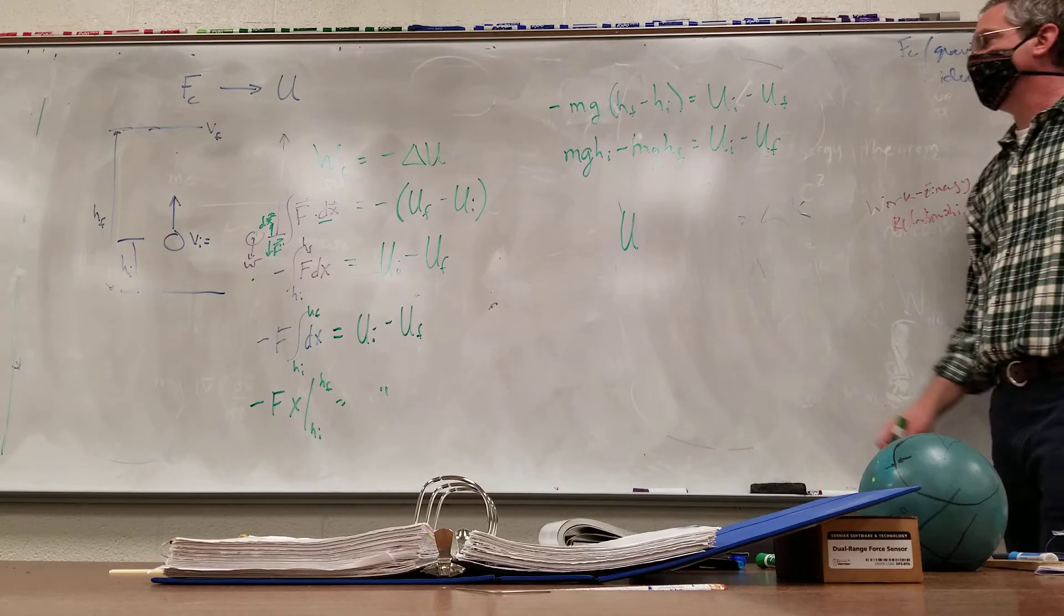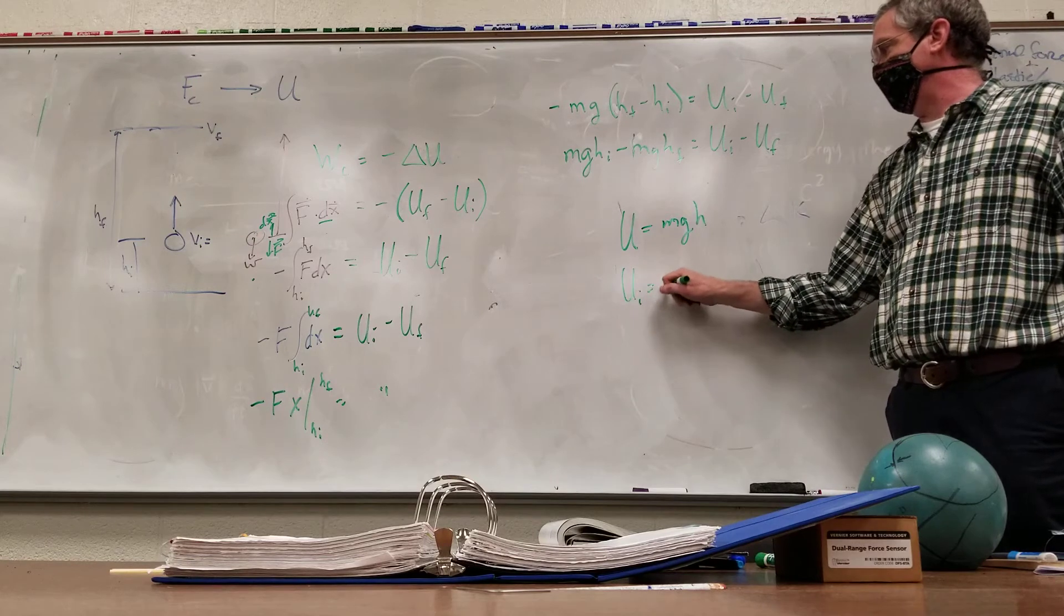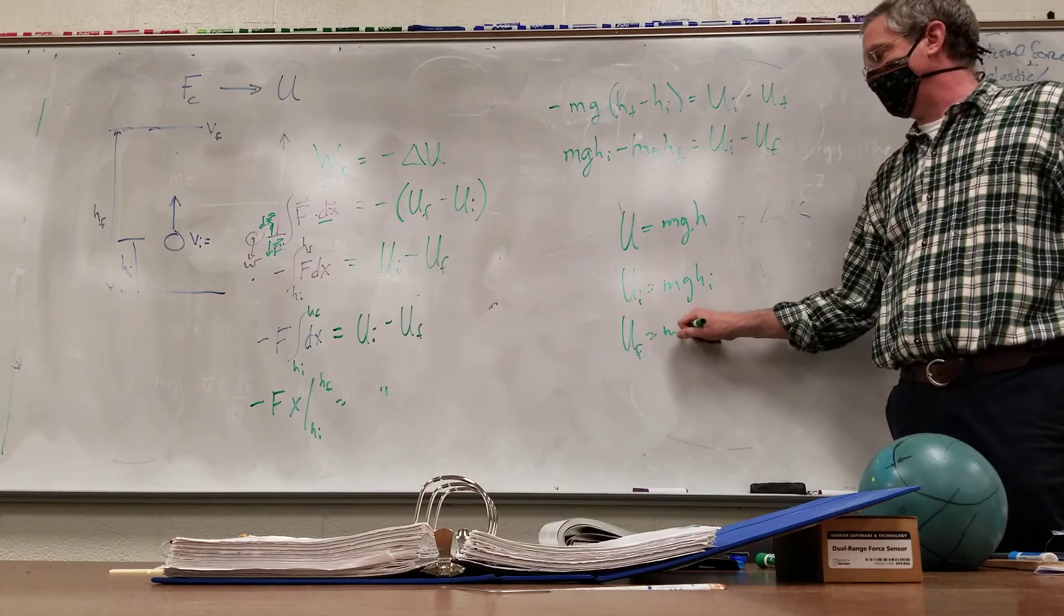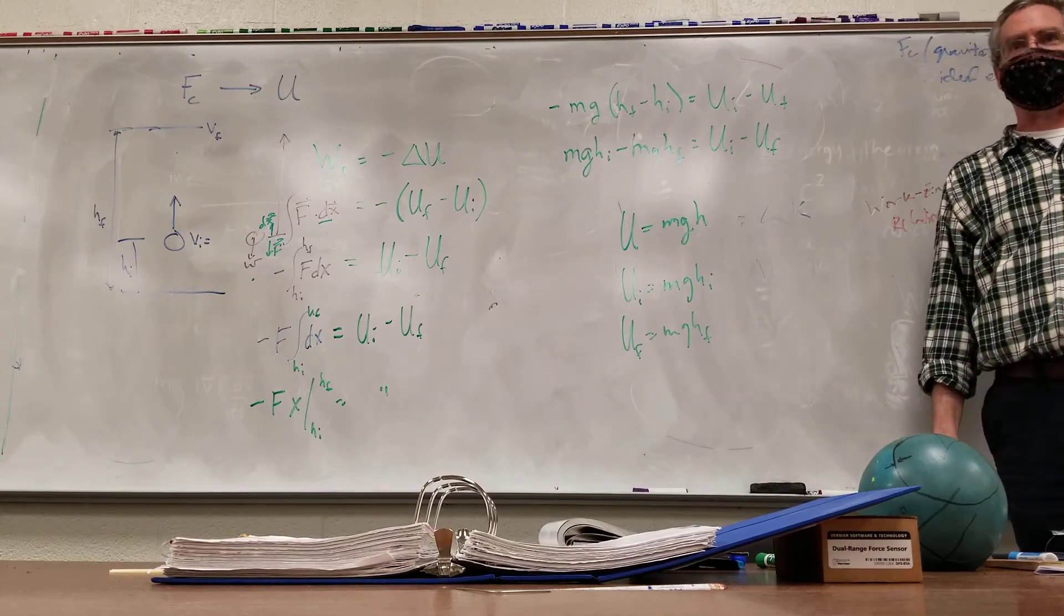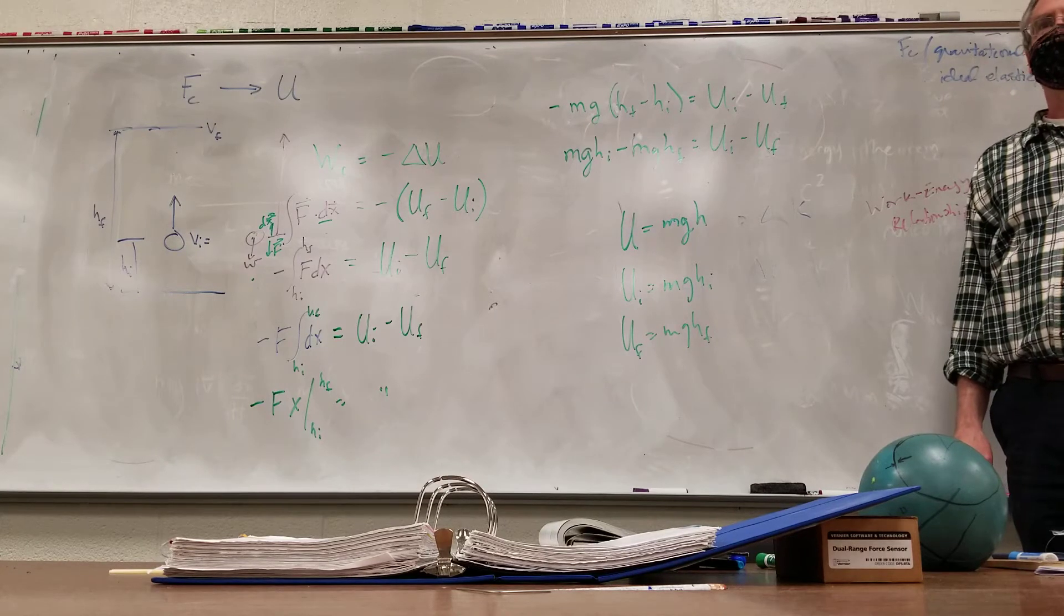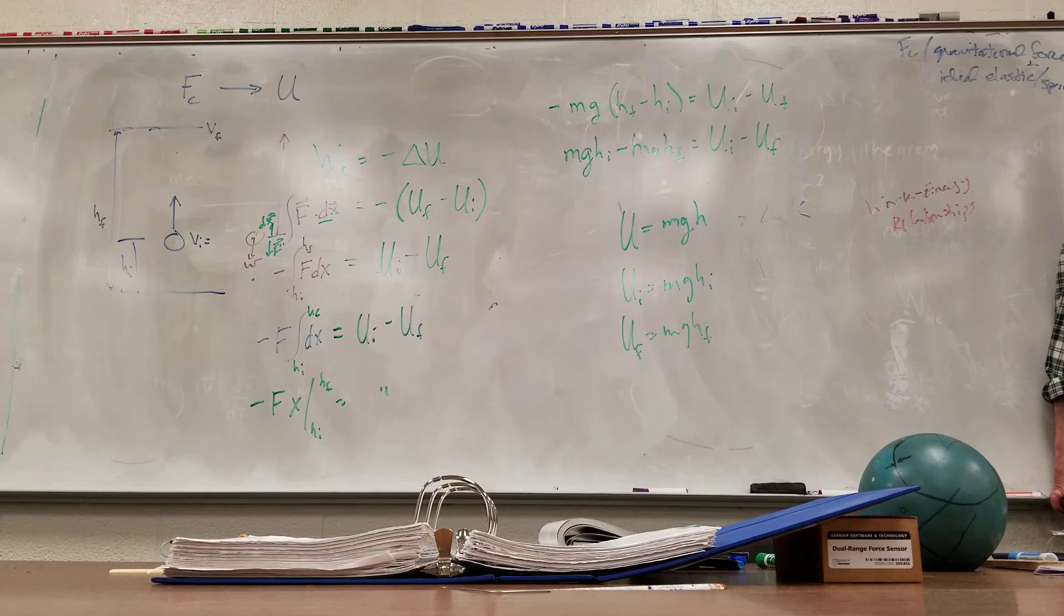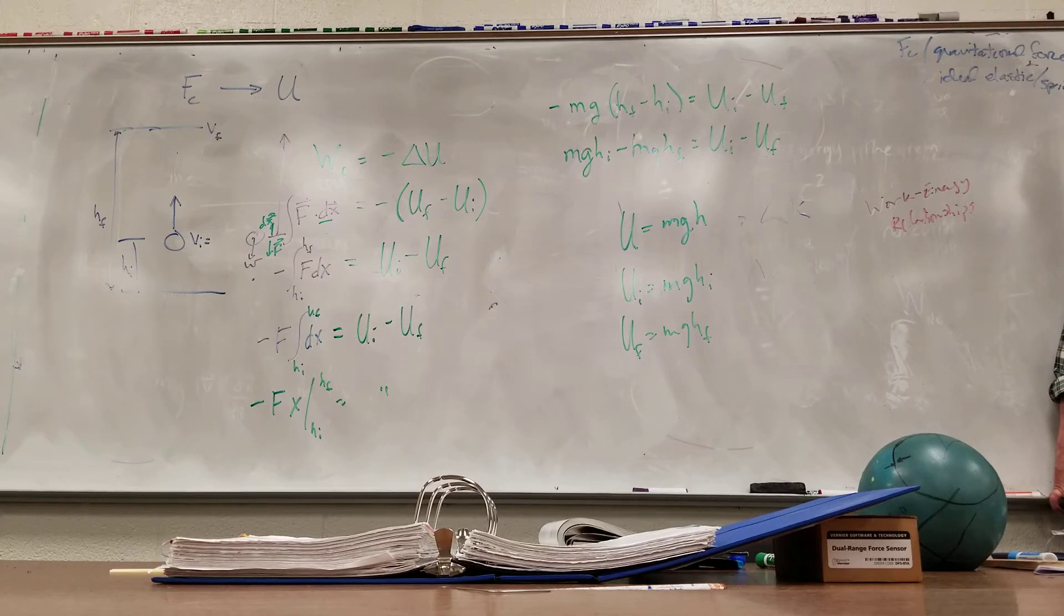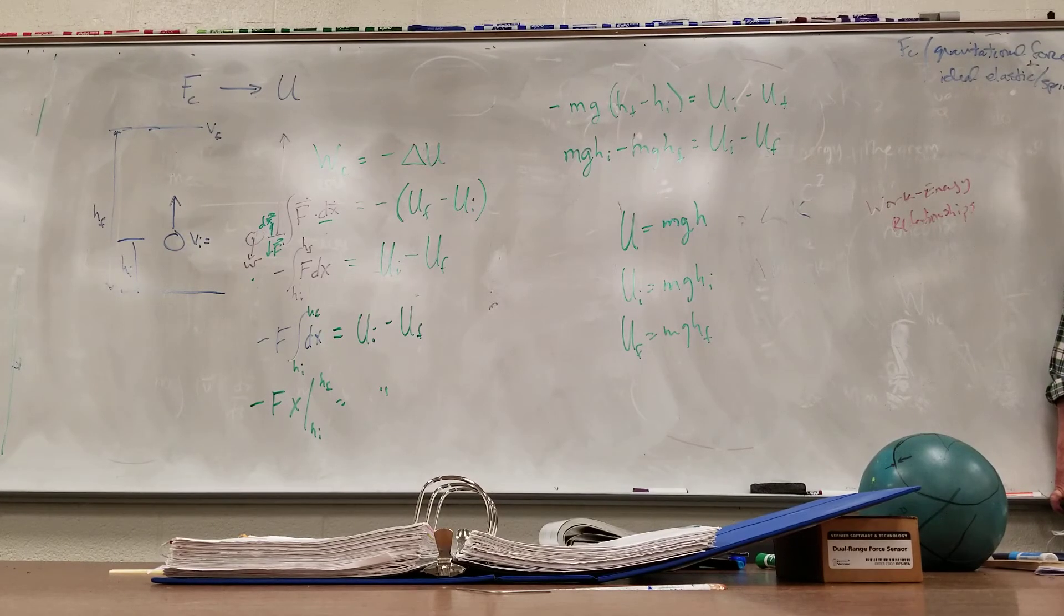Yeah, not delta h. So if u is equal to mgh, this works. So u initial would be mgh initial. u final is mgh final. So u initial minus u final would be mgh initial minus mgh final, which is what we have right here. This is a solution. What is another solution which would also work? Let's see. I assume FC is force. And u is energy. The units aren't going to match. It's simpler than that. There's actually an infinite number of solutions that work.